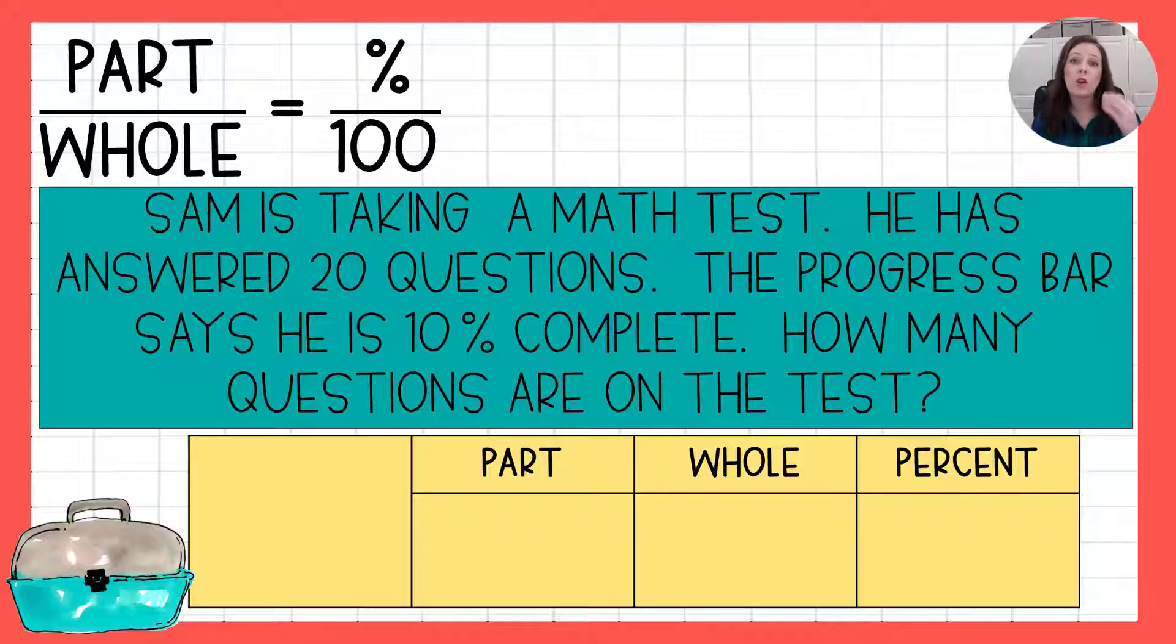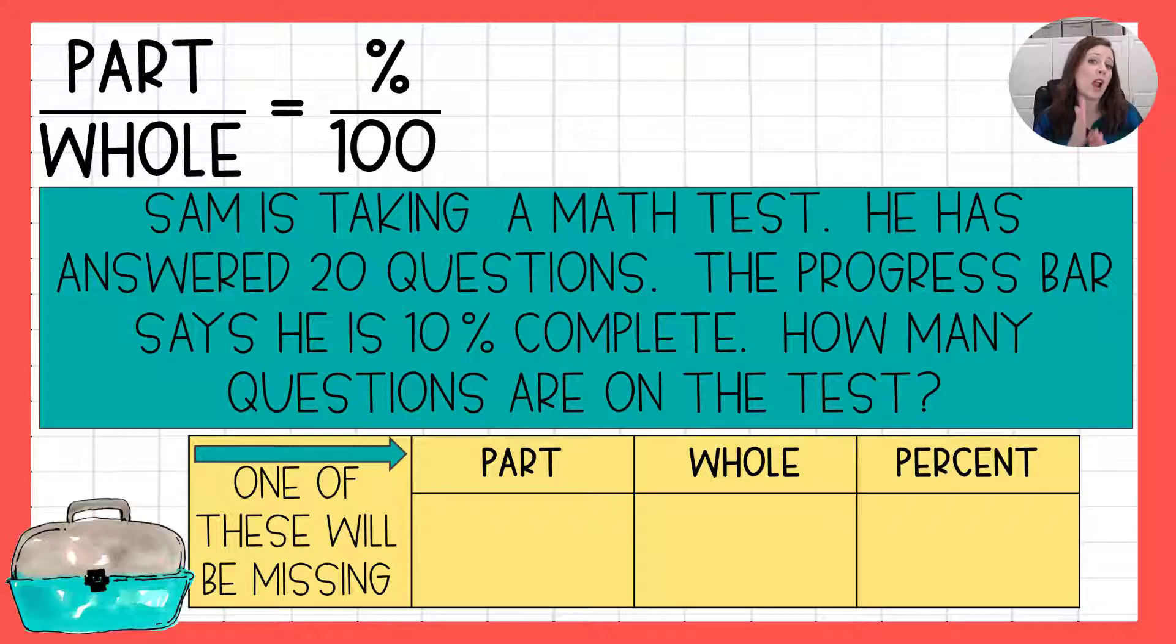The first thing you want to do is figure out what is missing. Do you have your part? Do you have your whole? And do you have the percent? One of those things will be missing. One of those will be our x, our unknown value, our variable, in our proportion. The first piece of information that we come to is he has answered 20 questions. Is that part of the questions on the test? Is that all of the questions on the test or is that a percent? You got it. That's just part of the questions on the test. The whole would be how many questions are on the test all together and that's what it's asking us. It says how many questions are on the test. So my whole is my unknown. I don't know. And then percent it says he has completed 10 percent. So that is my percent.